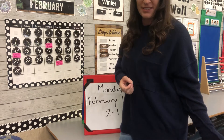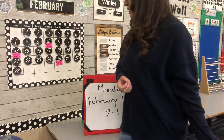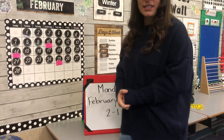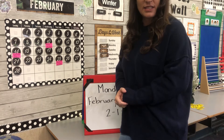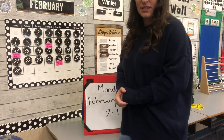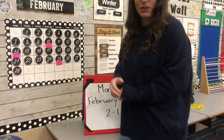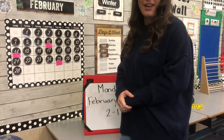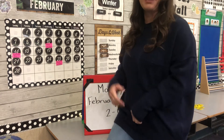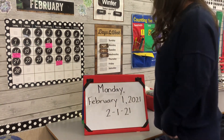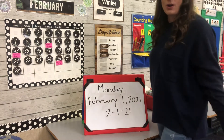Groundhog's Day happens in Pennsylvania. They take this groundhog out, and if he sees his shadow he gets scared and goes back into his burrow, and it's going to be a late spring. But if he does not see his shadow, it's going to be an early spring — he'll come out early and spring will start earlier.